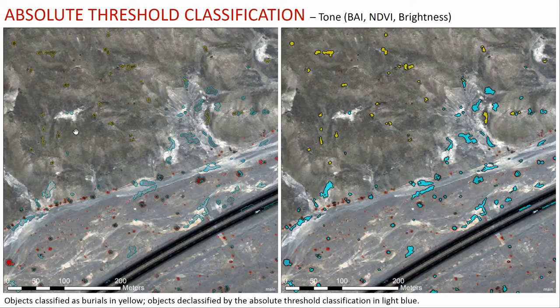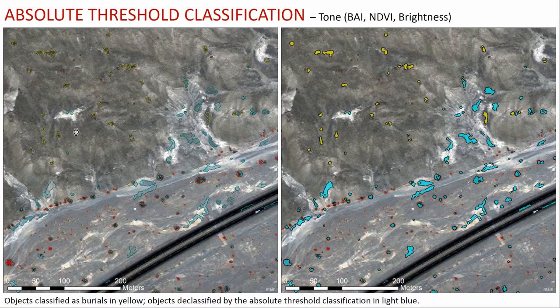In the last step — object classification — I use a simple series of decision trees and a random forest classifier. The decision trees are actually optional; you just don't have to use them. But I found them useful to decrease the number of candidates. Here I use the BI (built-up index) to declassify objects like roads, and the NDVI to declassify a large number of trees that, due to their circular shape and similar size, were incorrectly classified as possible candidates.